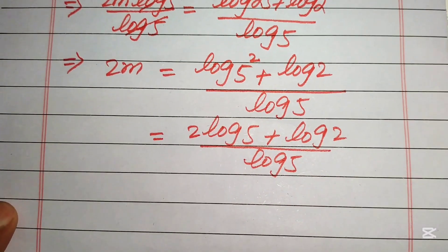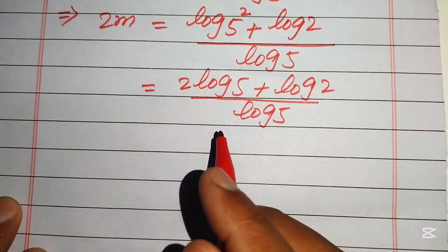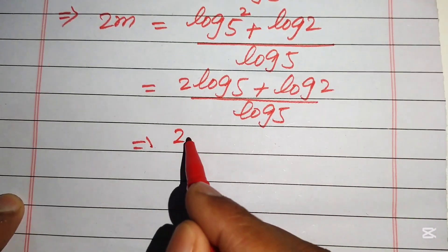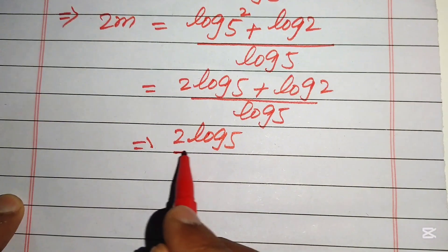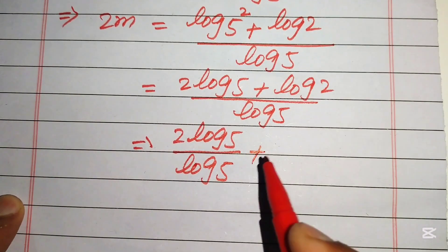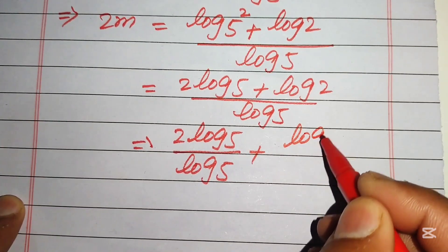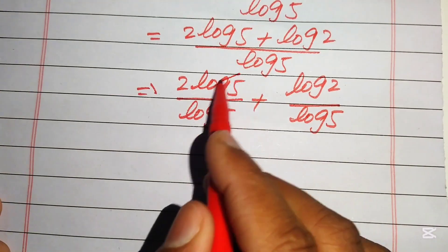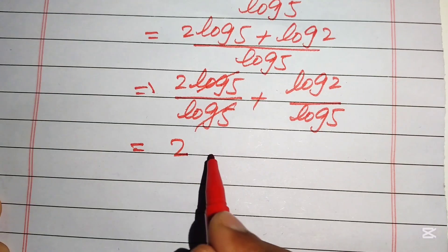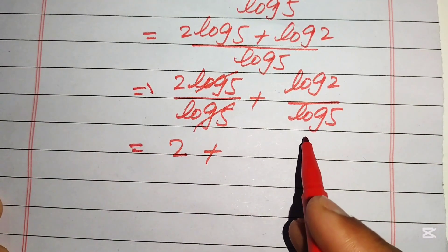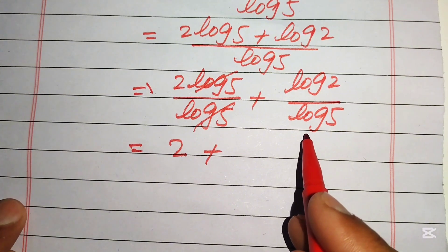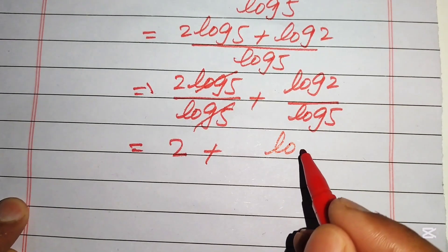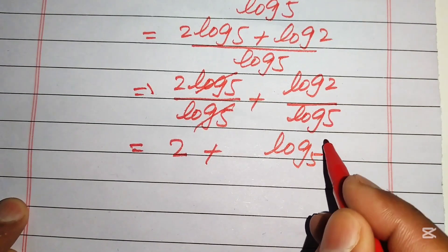We break the fraction into separate terms: 2·log(5) divided by log(5), plus log(2) divided by log(5). The log(5) in the first term cancels, giving 2m equals 2 plus log(2)/log(5). Using the change of base property, log(2)/log(5) is written as log base 5 of 2.